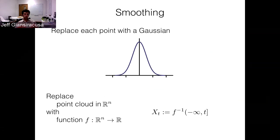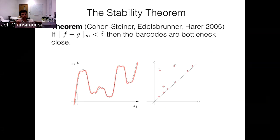The stability theorem in the form they actually proved states that if we have two functions that are close to each other in the L-infinity norm, then the barcodes are bottleneck-close to each other. So if you jiggle your function a little bit in the L-infinity norm, the barcode or persistence diagram won't move very much. The big bars — points far from the diagonal — move a little bit, and things near the diagonal, corresponding to very small bars, can potentially disappear. This is the fully precise version of the stability theorem that Cohen-Steiner, Edelsbrunner, and Harer first proved.